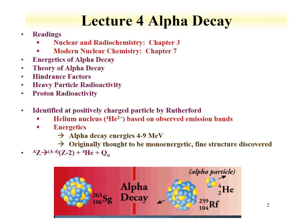An example of an isotope that undergoes alpha decay is seaborgium-263. It decays — it loses two protons and two neutrons — so it goes to rutherfordium. The A reduces by 4, going from 263 to 259, and there's a helium nucleus emitted as the alpha particle. The energy, this Q value, is really the sum of the alpha energy and the recoiling nucleus energy.